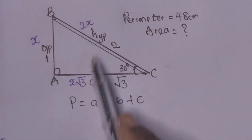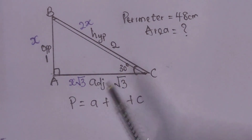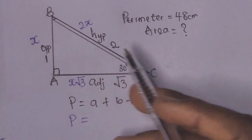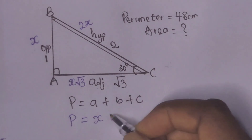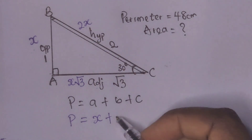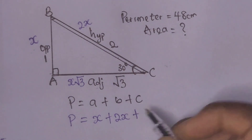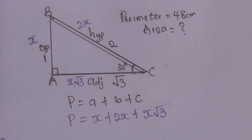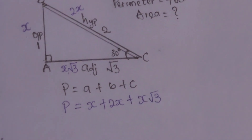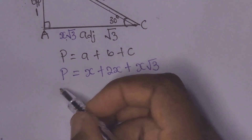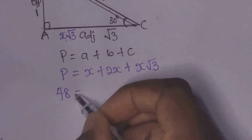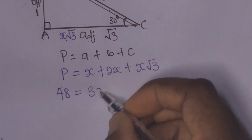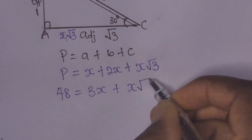We'll be using this as the length of the triangle. It simply means that our perimeter will be equal to: a will be x, b will be 2x, and c will be x root 3. The perimeter is 48 cm, so we have 48 equal to x plus 2x, which gives 3x, plus x root 3.